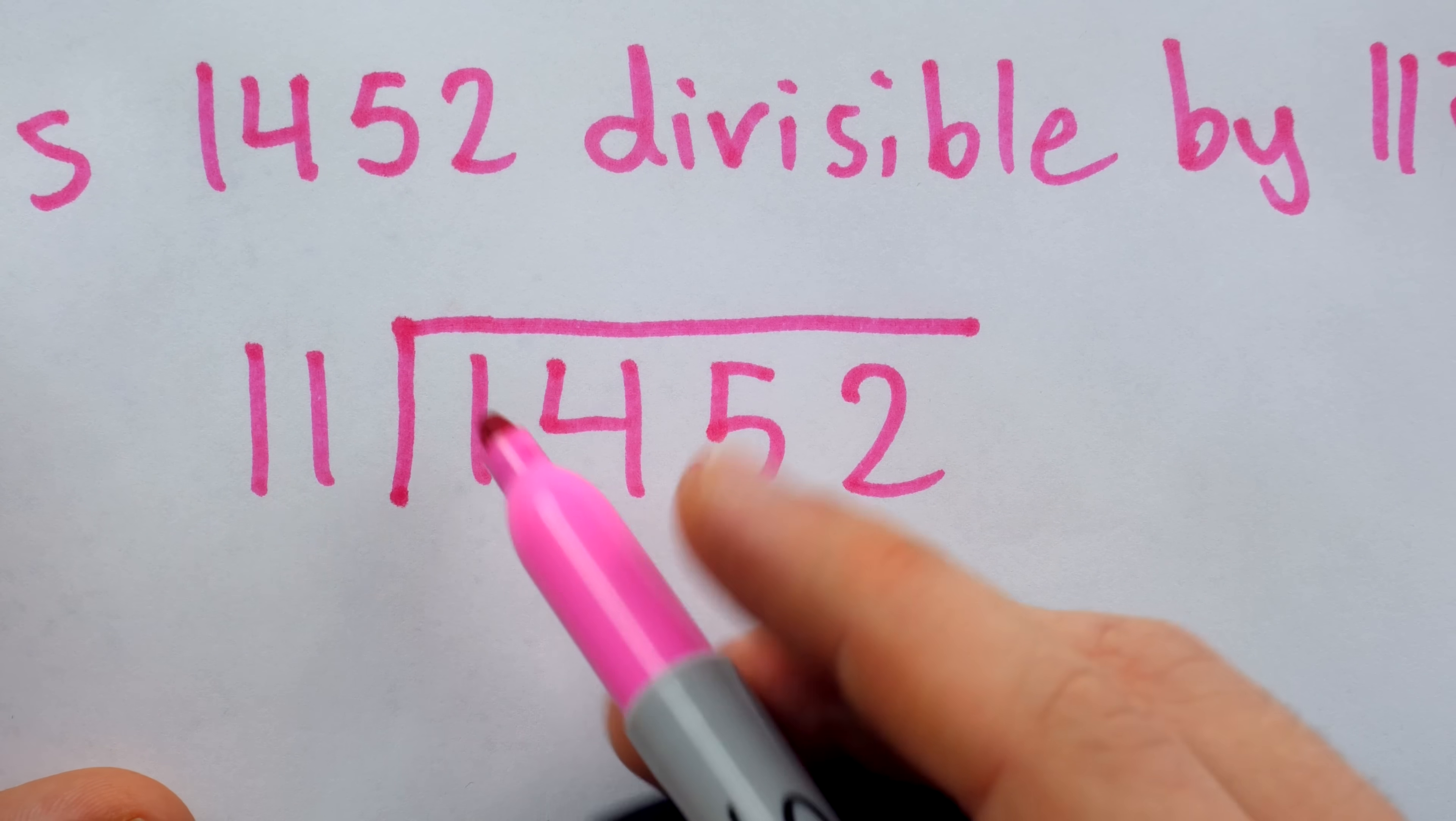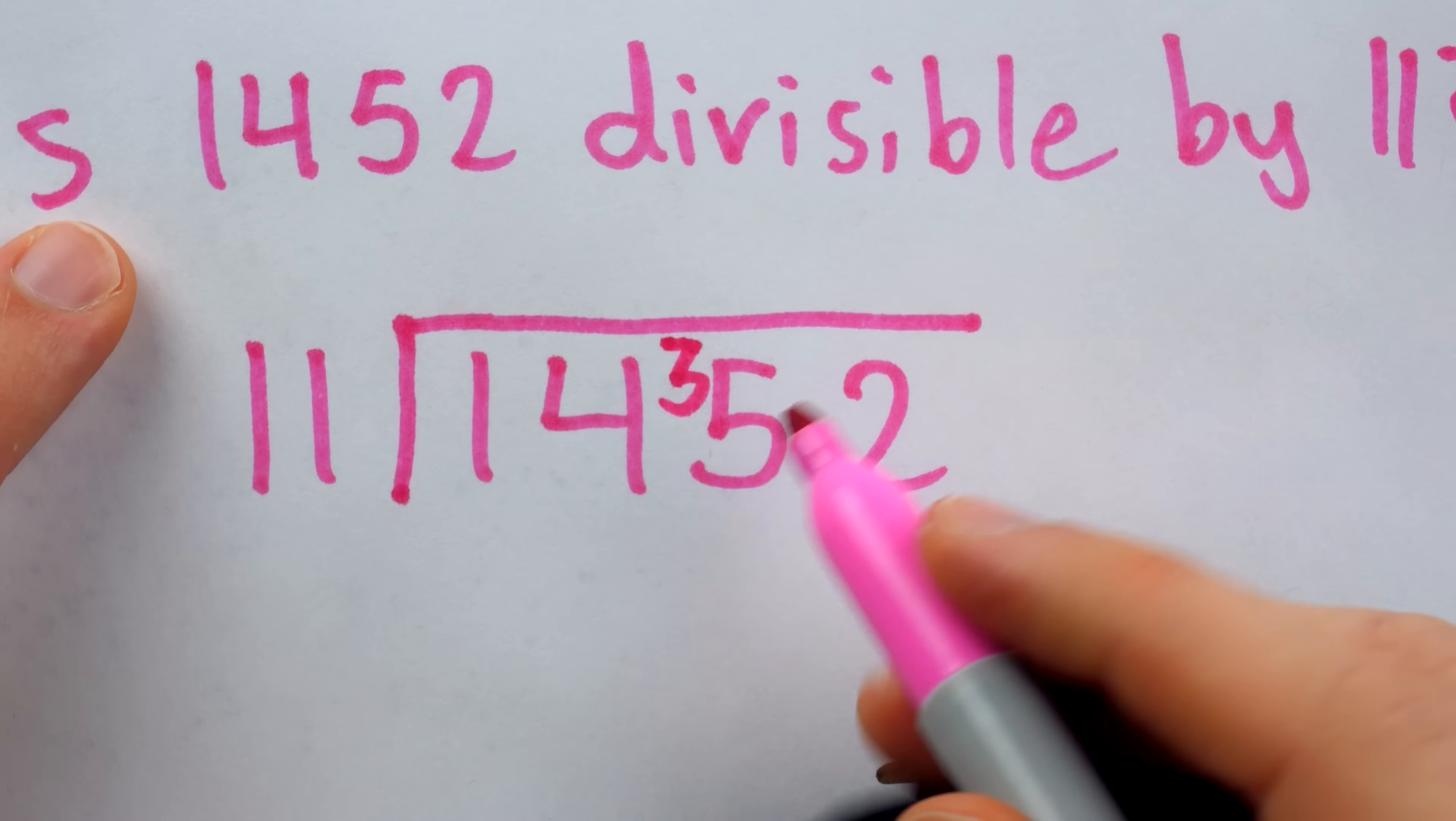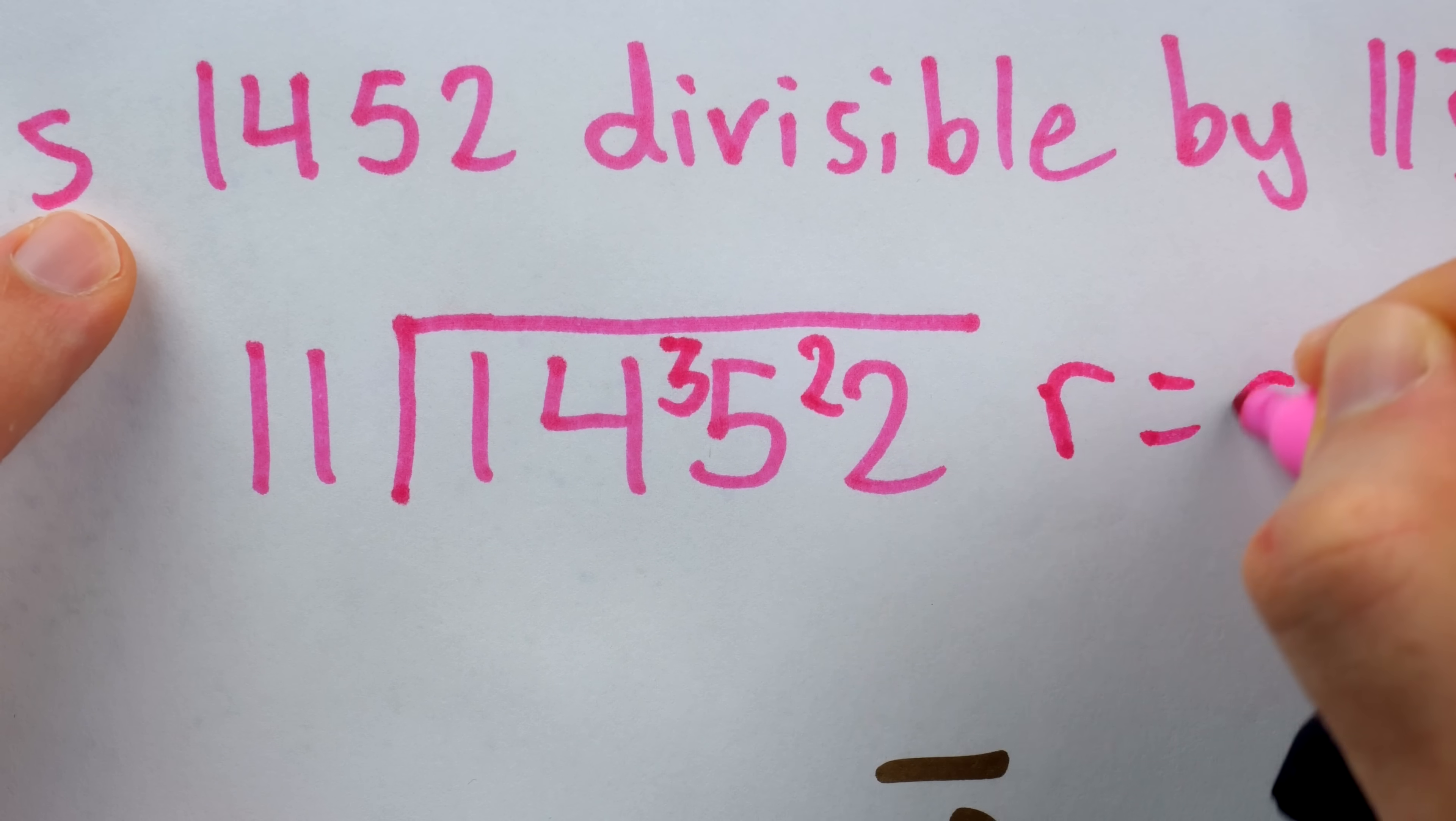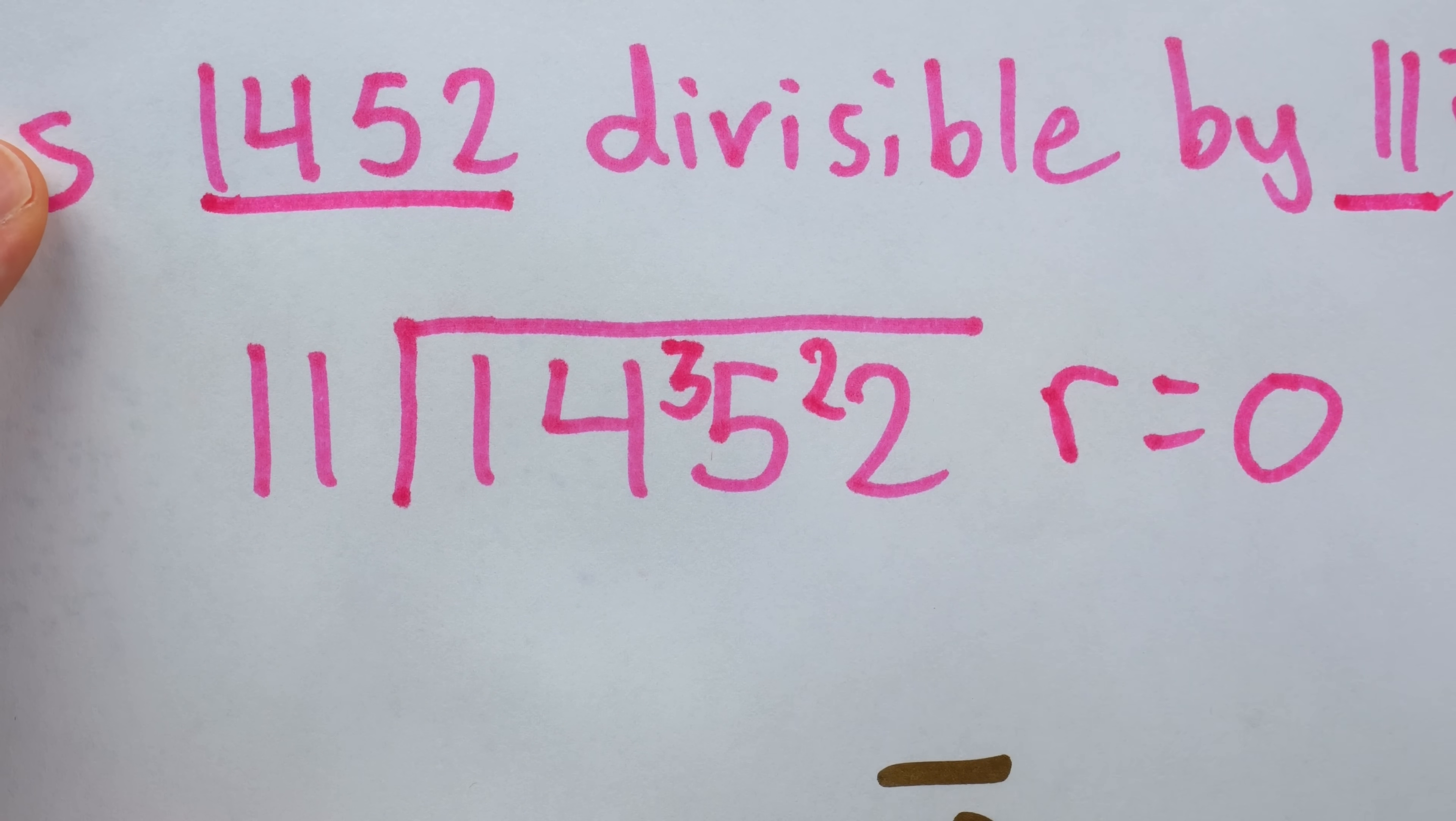Does 11 go into 1? No. Does it go into 14? Yes, with a remainder of 3. Does it go into 35? Yes, with a remainder of 2. Does it go into 22? Yes, remainder of 0. So the answer is yes, 1,452 is divisible by 11.